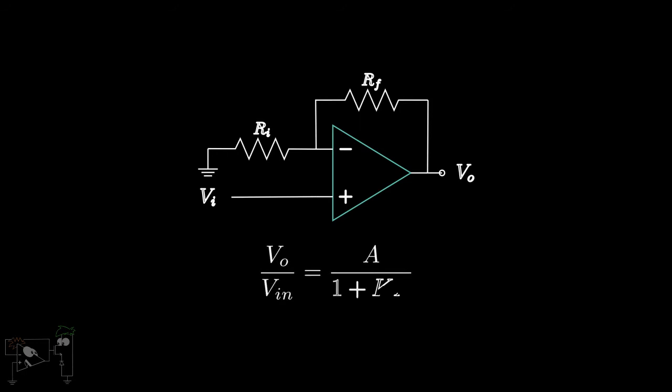How do we construct this feedback path? The simplest way to do this is to add a resistor divider in the feedback loop. The gain of the closed loop system is A upon 1 plus K into A. Assuming it's an ideal op-amp, A is infinity. So we can ignore the 1 in the denominator as KA is much larger than 1. The A cancels out, and we're just left with 1 over K, which is a finite value.